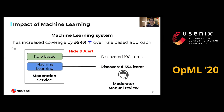This means when the rule-based system finds 100 items violating terms, the machine learning system finds 554 items violating terms that cannot be found by the rule-based approach.